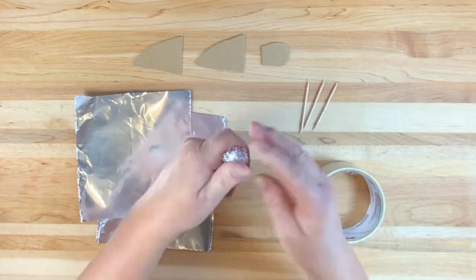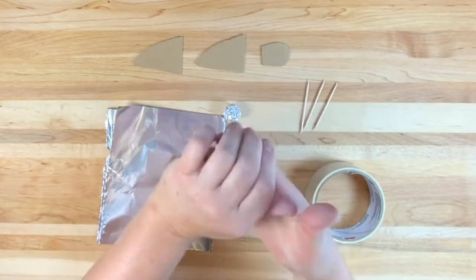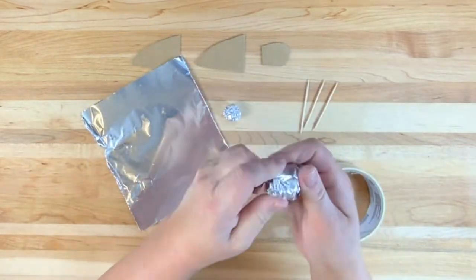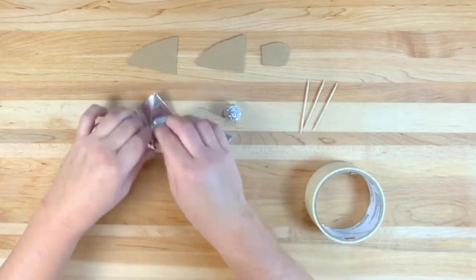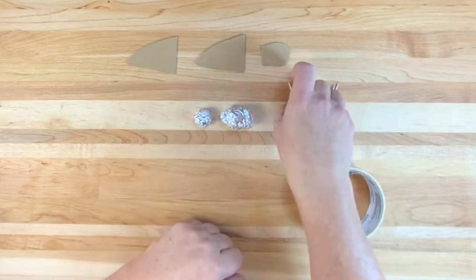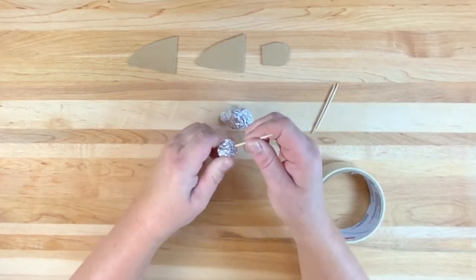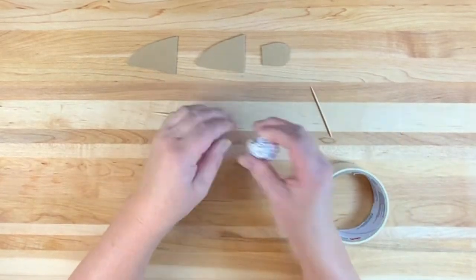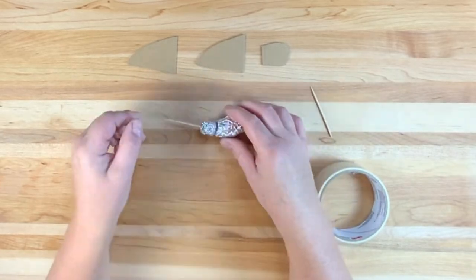Step two, the head and body. Roll a small sphere and egg form out of aluminum foil for the head and the body of the hummingbird. Insert a toothpick into the sphere and another one through the egg form. Connect the two forms together.